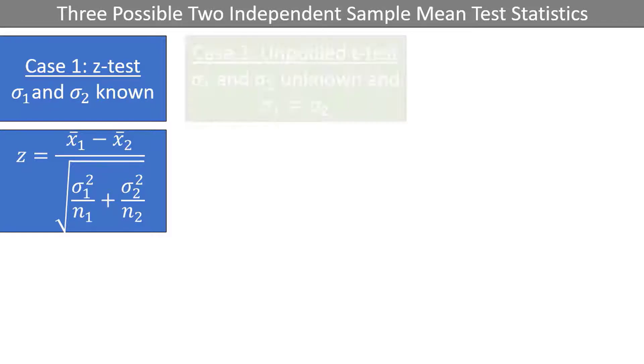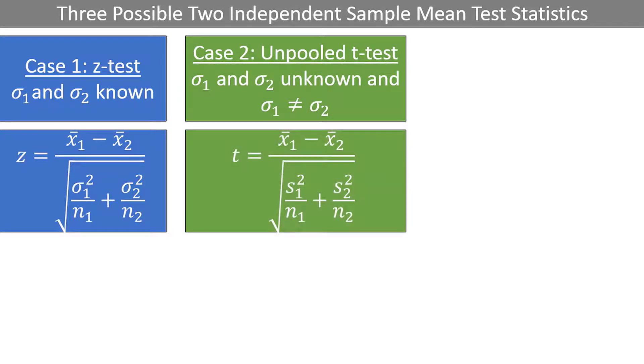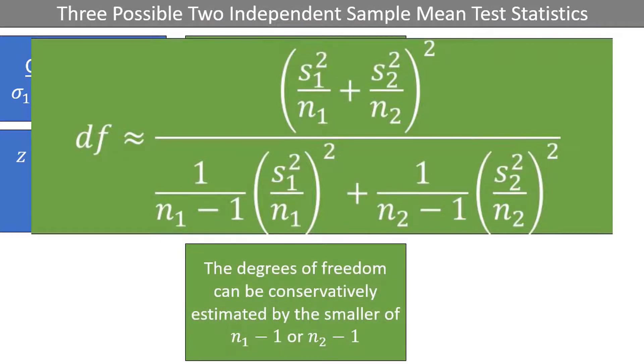Case 2 is the unpooled t-test, which should be used when the population standard deviations are unknown and assumed to be unequal. The test statistic is the same as it was in the z-test, except we substitute s for sigma. The degrees of freedom should technically be calculated using this formula, which is a little bit complicated, but the degrees of freedom can be conservatively estimated by the smaller of n1-1 or n2-1.